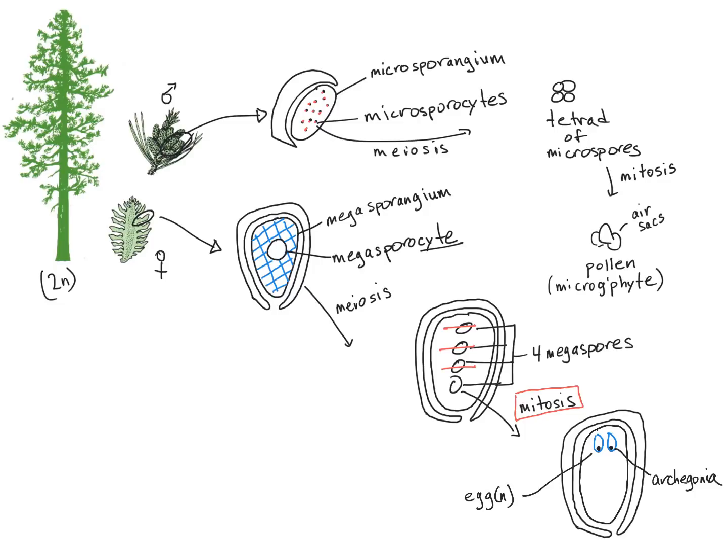So now what we need is for sperm to be delivered to produce a zygote. Recall that I told you that pollen of gymnosperms is oftentimes wind dispersed. So off of these pollen cones, what we get is several grains of pollen that, with the help of their air sacs, are able to travel long distances through the air.